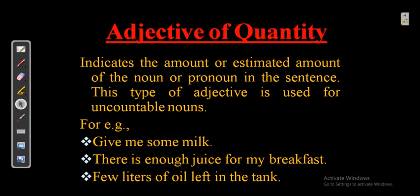The second type is adjective of quantity. It is always used with uncountable nouns because it gives an estimated amount of the noun or pronoun. For example: 'Give me some milk' — 'some' is the adjective of quantity and 'milk' is the noun. It estimates amount. Another example: 'Few liters of oil left in my tank' — 'few' is an estimate, not an exact number.